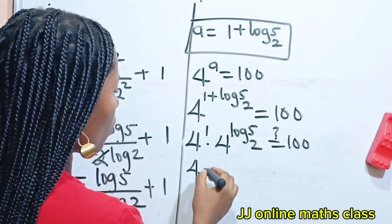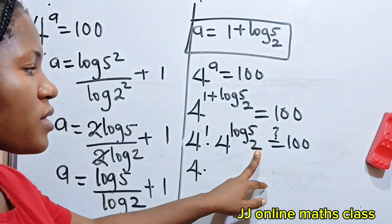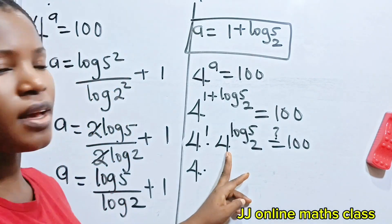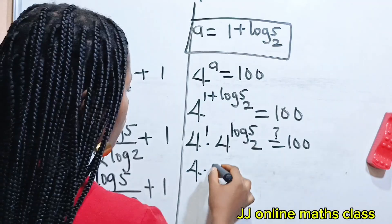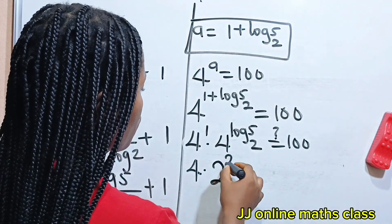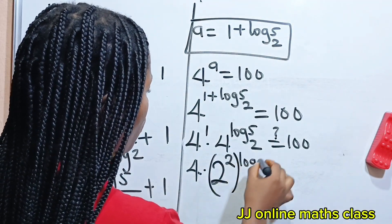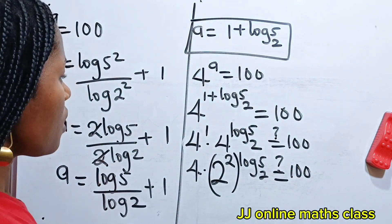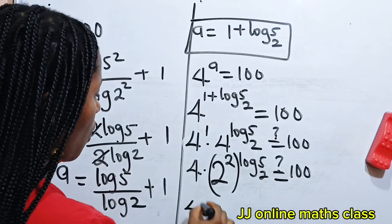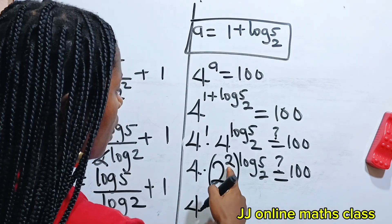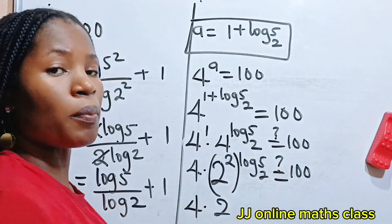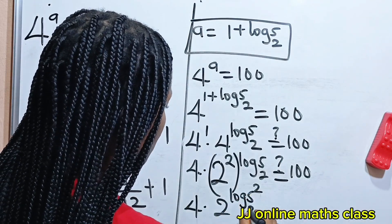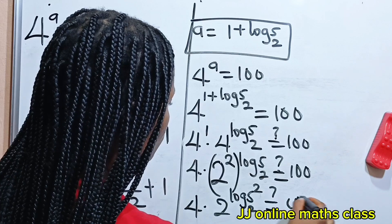So 4 to the power of 1 is 4. Now because this is base 2, let's change 4 to 2 squared. So we have 2 squared raised to the power of log 5 base 2. This gives us 4 multiplied by 2 to the power of log 5 squared base 2, which is log 25 base 2. Is this equal to 100?